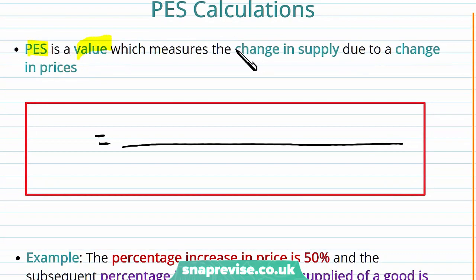And our PES is going to be a value which measures the change in supply due to a change in its prices. So let's talk about what the equation is going to be.